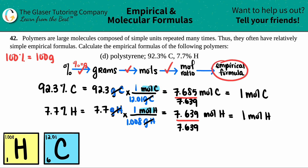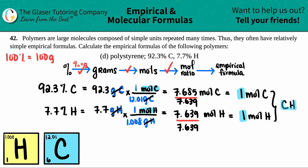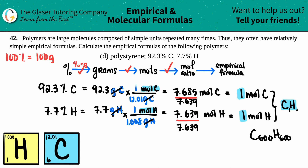Now we just create the empirical formula from those numbers. I have one carbon and one hydrogen. In a formula we don't need to write the one, so the empirical formula is simply CH. That's what polystyrene is at its basics — one carbon and one hydrogen, and it just gets polymerized, repeating over and over again. So for a polystyrene with 600 carbons, you can be certain it has 600 hydrogens because it's a one-to-one ratio.